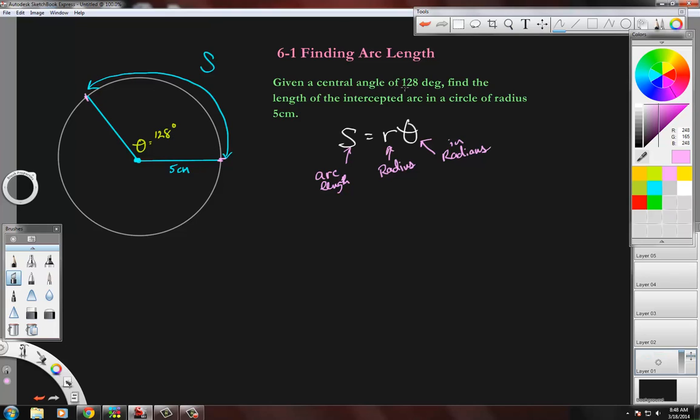I just need to convert 128 degrees to radians. We'll put that over one, and we know that if we're converting degrees to radians we multiply by pi over 180.